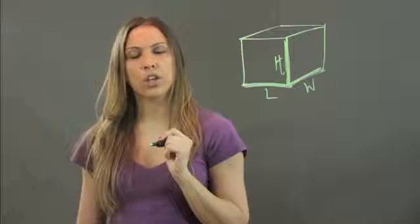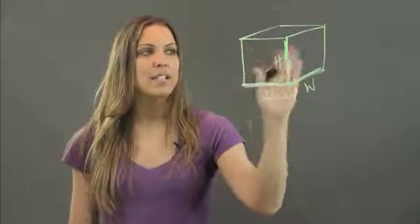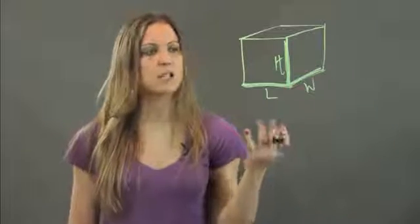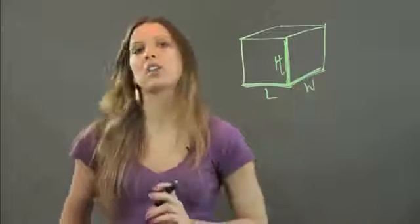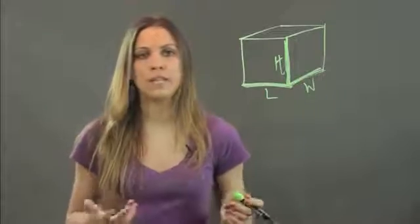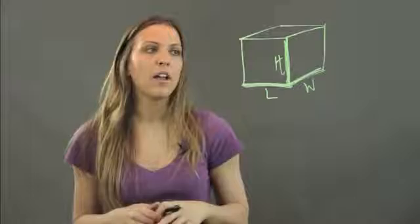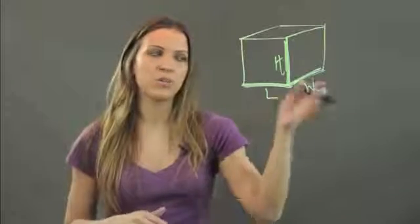But like I said, I know that a cube is made up of six faces that are all squares, which means that my length, width, and height are actually going to be all the same. So if it's three inches long, then it's also three inches high, and it's also three inches wide.